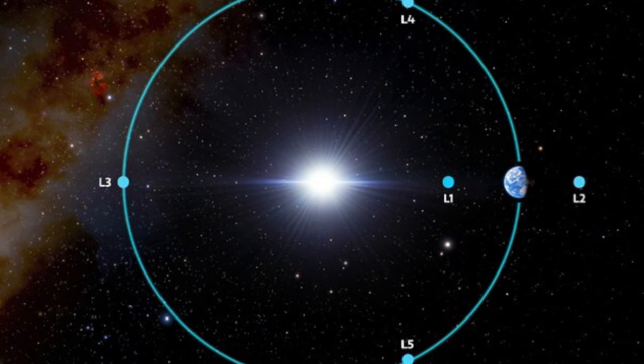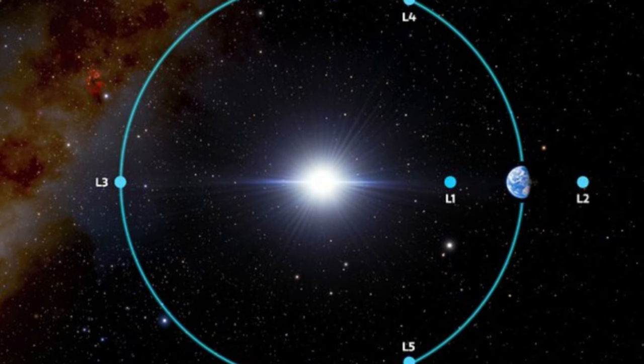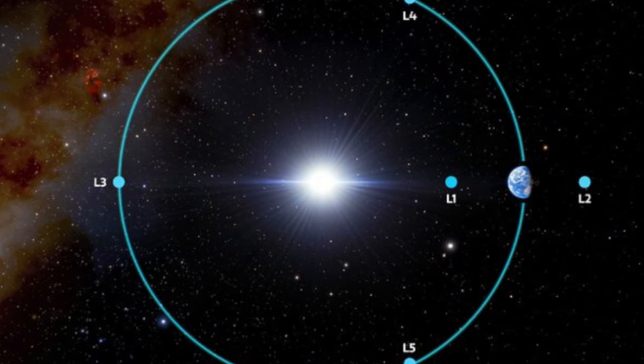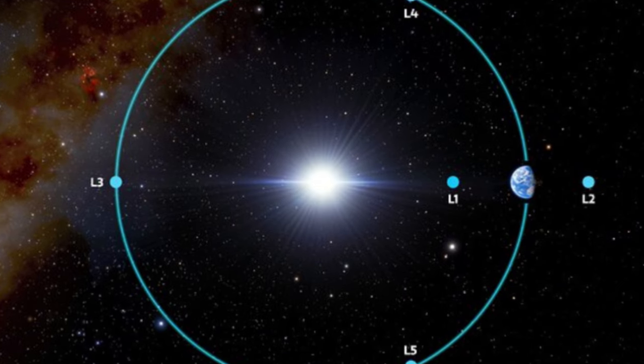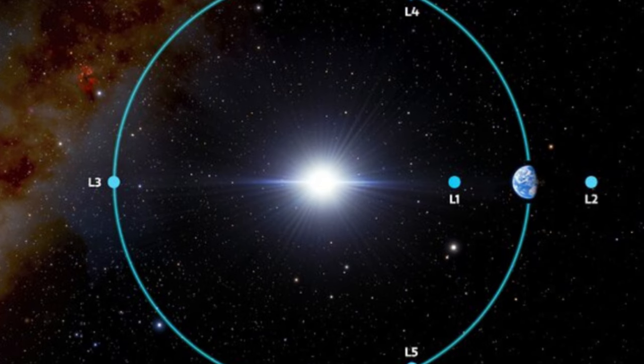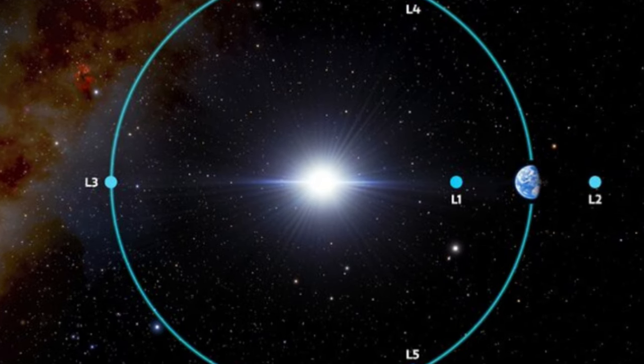This makes C-type asteroids an attractive target for studying the early solar system and the formation of the planets, and Earth Trojans potentially even more so. We currently have several space observatories parked in Earth-Sun Lagrange points. Having a C-type asteroid hanging about nearby within reach would be an excellent opportunity.